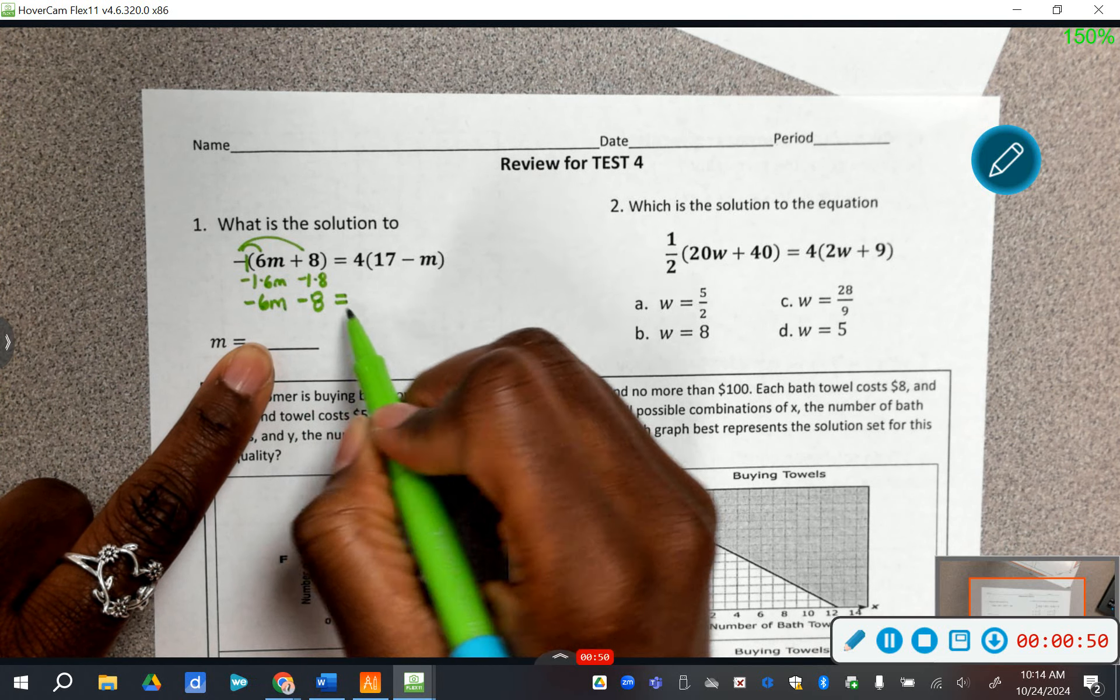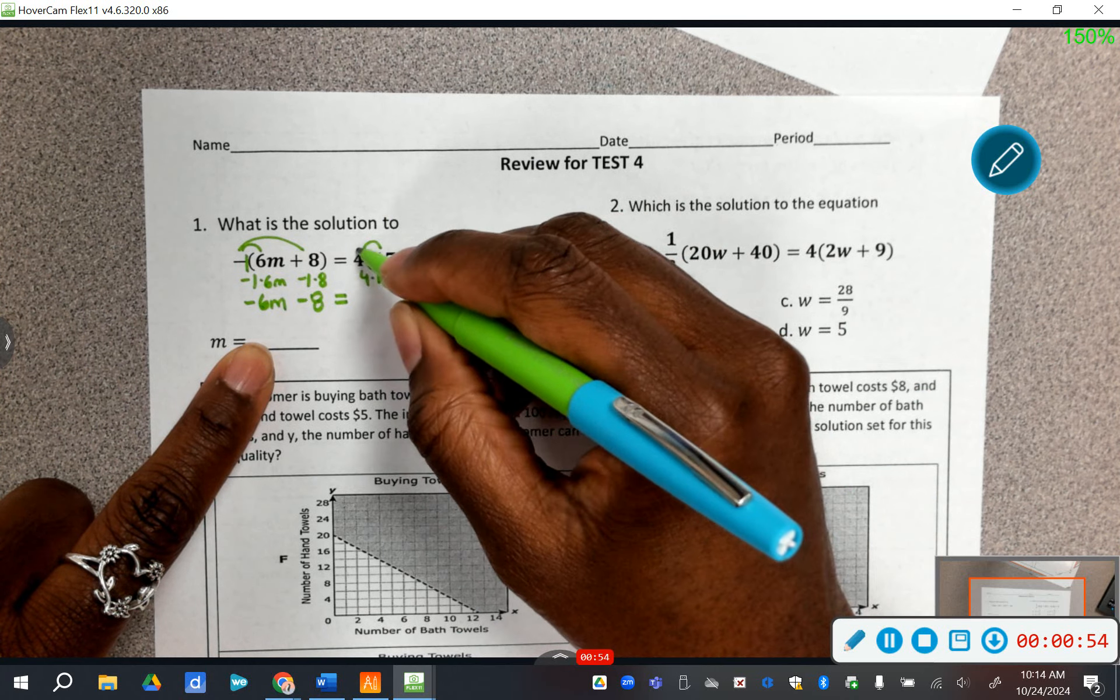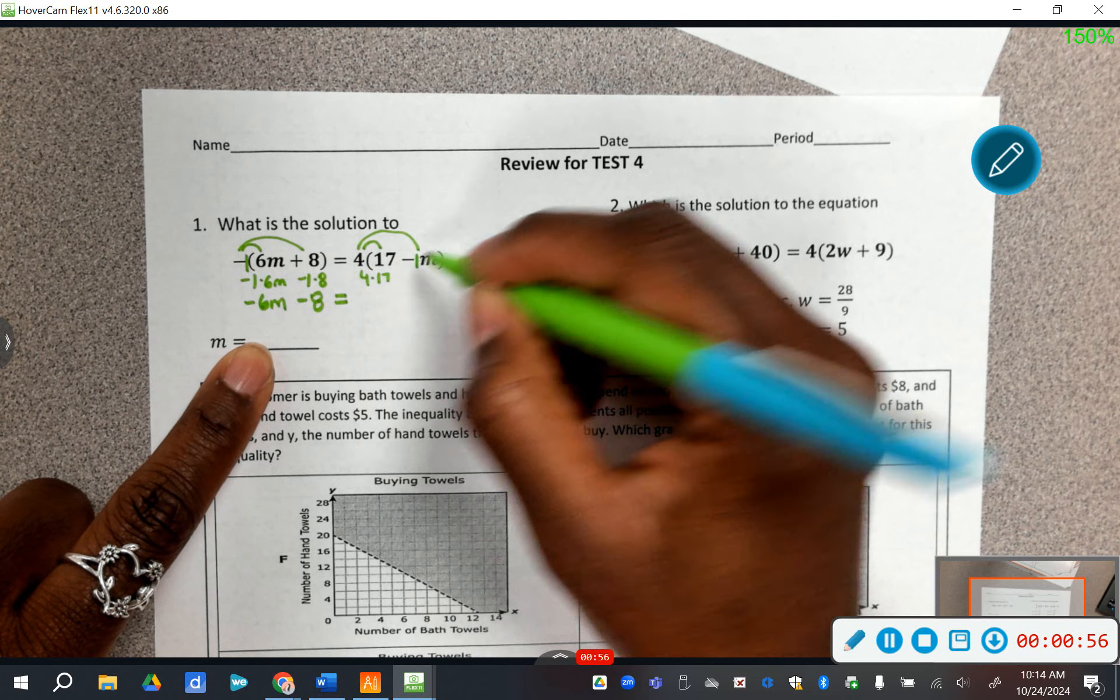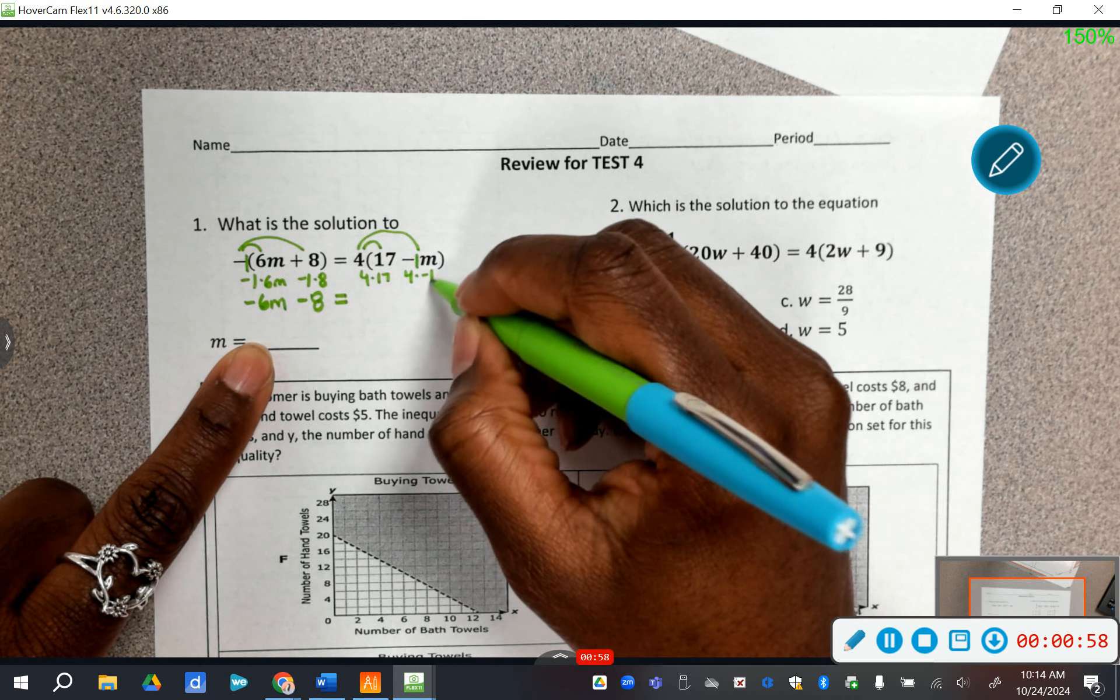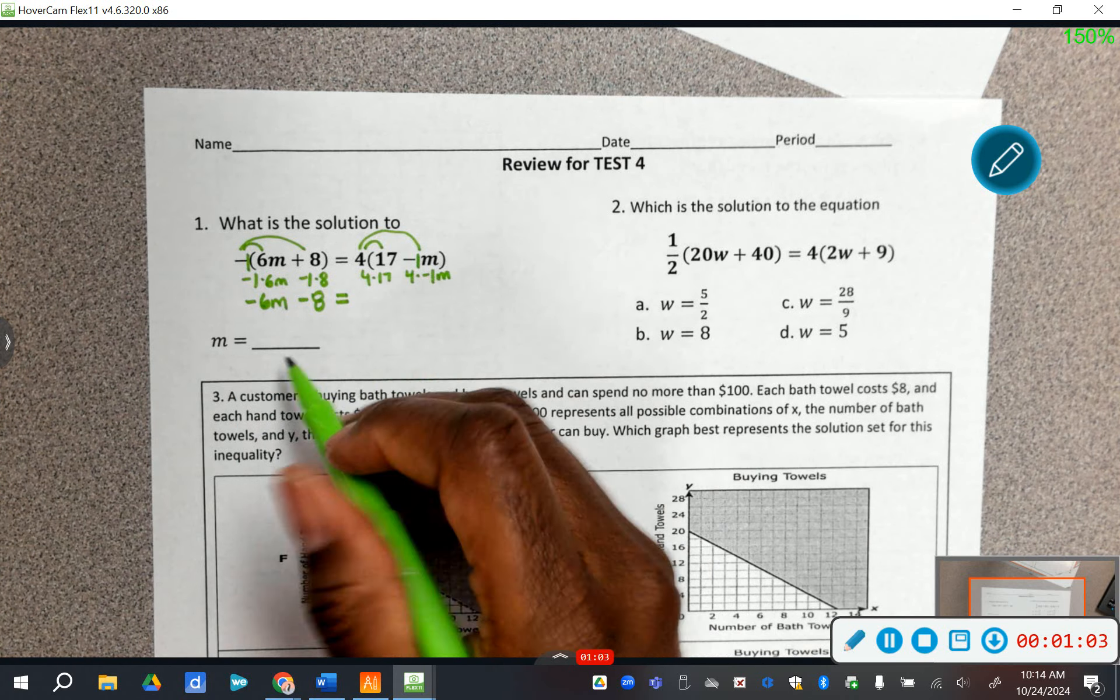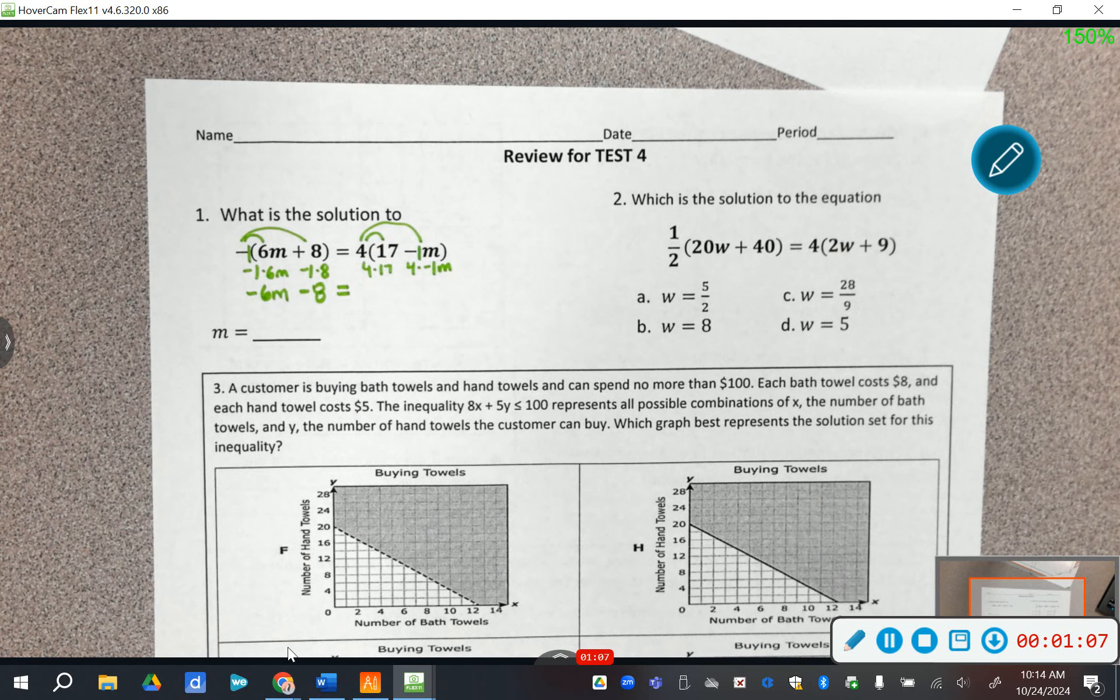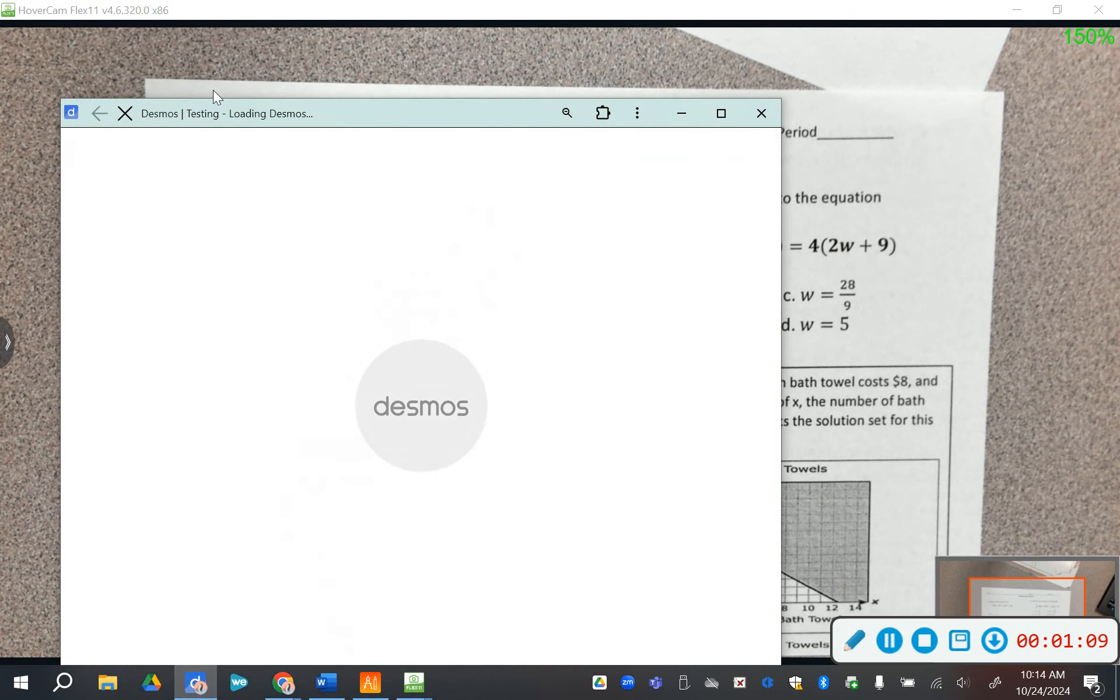Then that's where we have our equals and then here we got to do 4 times 17 and then 4 times, there's another invisible 1, so 4 times negative 1m. So go ahead and fill in the rest of that blank and then see if you can answer your question. Because remember, you need to know the steps to solving.